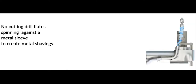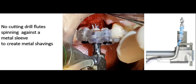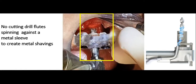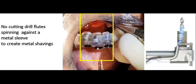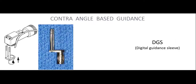A third benefit addresses metal shavings in the wound. In conventional guided surgery, drill flutes spin against metal sleeves as the drill moves up and down, creating tiny titanium shards inside the wound. With contraangle-based guidance, no cutting drill flutes spin against the metal sleeve — what moves up and down is the digital guidance sleeve, while the drill spins freely inside the surgical guide. So three significant benefits: irrigation, intra-arch access, and no metal shavings.